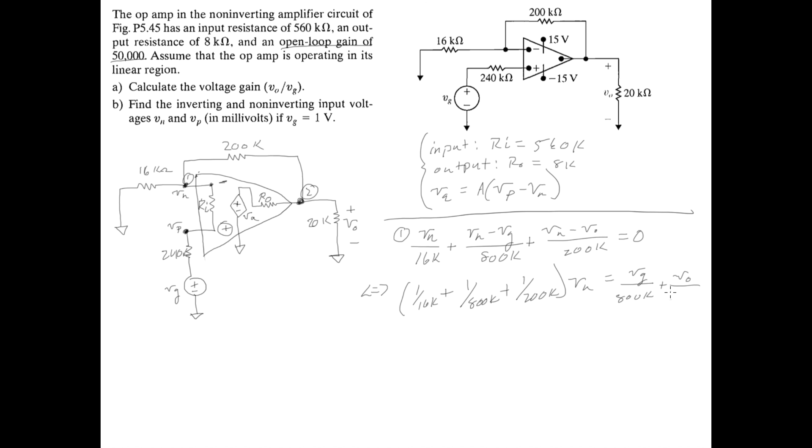So on the right side, we're just going to have positive now, Vg over 800k plus V0 over 200k. So if we go ahead and simplify that, simplify all of this, and multiply everything out, we're just going to get the final equation of 55 Vn is equal to 4 V0 plus Vg. And we're just going to label that as equation 1.